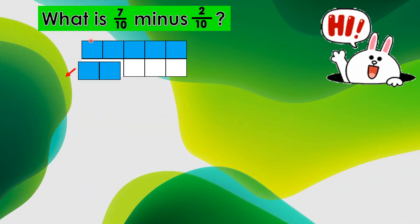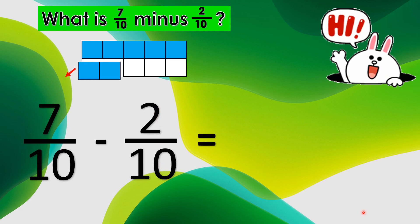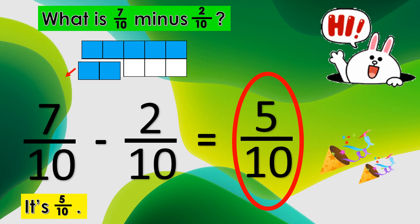What is 7 tenths minus 2 tenths? 7 tenths minus 2 tenths equals 1, 2, 3. Very good! It's 5 tenths. Good job, kids!